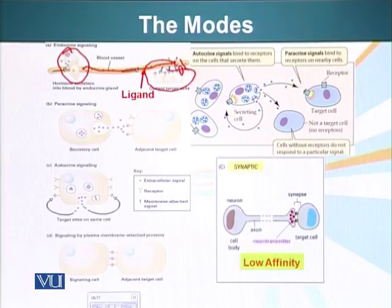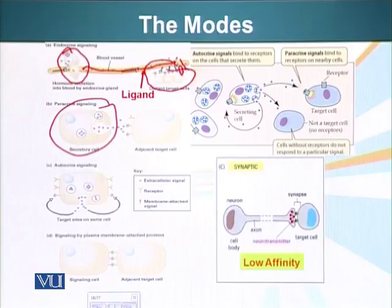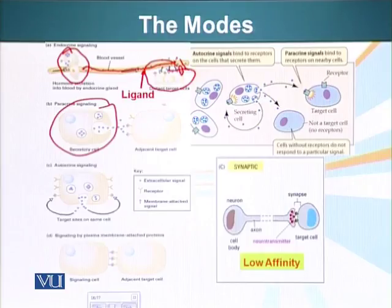There's paracrine signaling, in which a cell secretes a ligand and a cell in the near vicinity — not an adjacent cell, but somewhere nearby — receives the signal through diffusion. So here's a cell secreting the ligand, and here's a target cell in the close neighborhood that will receive the signal and respond.